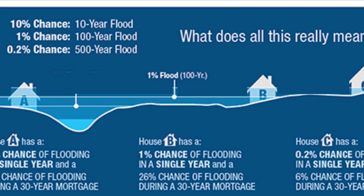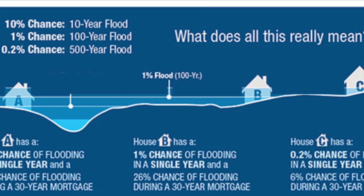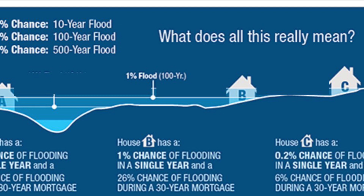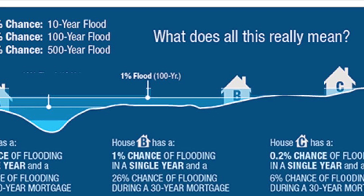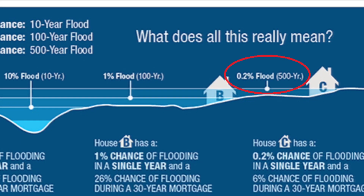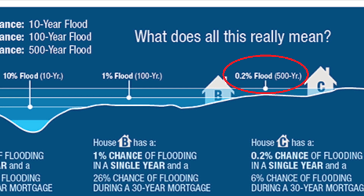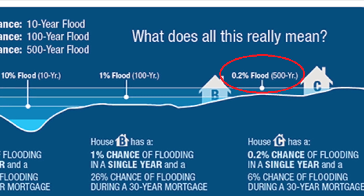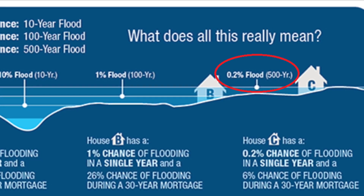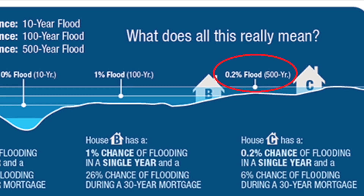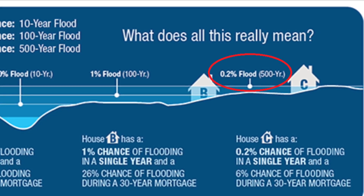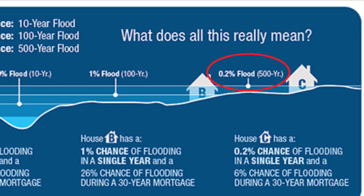Every 100 years a devastating flood, much higher, affects both house A and house B. Even worse is the flood that occurs every 500 years — the flood with the return period of 500 years — where all three houses are flooded.